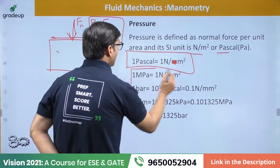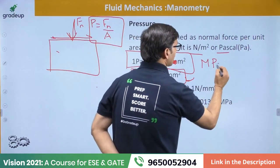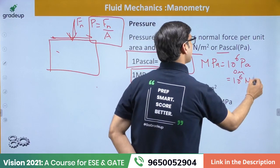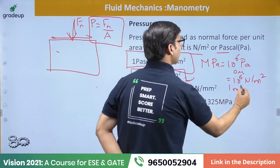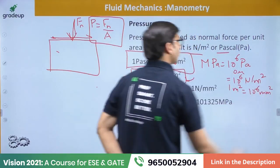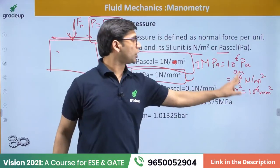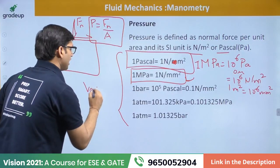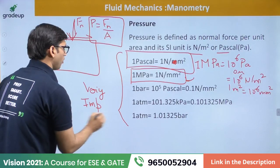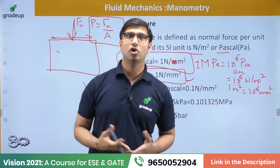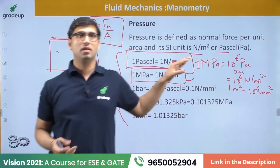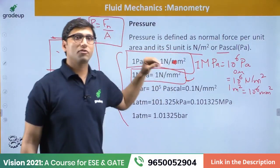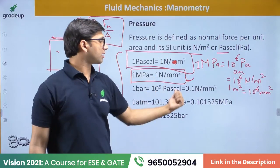One mega Pascal equals one Newton per mm square. Why? Because one mega Pascal equals 10⁶ Pascal, or 10⁶ Newton per meter square. Since one meter square equals 10⁻⁶ mm square, one mega Pascal also equals one Newton per mm square. These conversions are very important. One bar equals 10⁵ Pascal or 0.1 Newton per mm square.